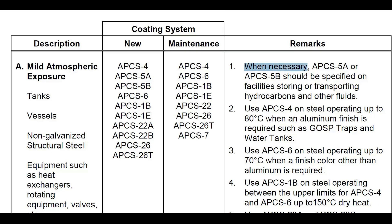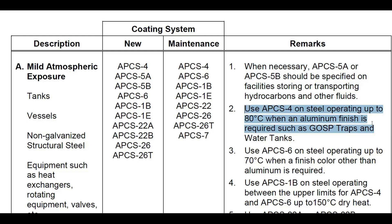When coating for mild atmospheric exposure, consider the following points. Point 1: When necessary, APCS5A or 5B should be specified on facilities storing or transporting hydrocarbons and other fluids. Point 2: Use APCS4 on steel operating up to 80°C when an aluminium finish is required, such as gas traps and water tanks. Point 3: Use APCS6 on steel operating up to 80°C when an aluminium finish is required, and APCS4 on steel operating up to 150°C when a finish color other than aluminium is required.